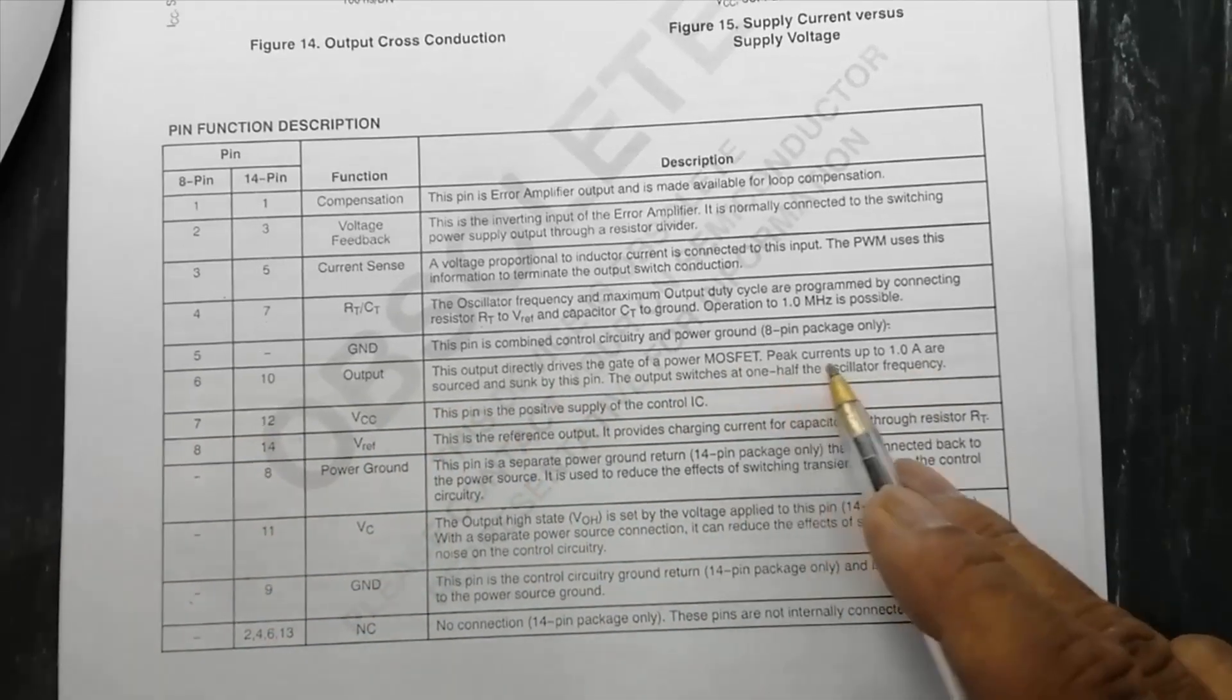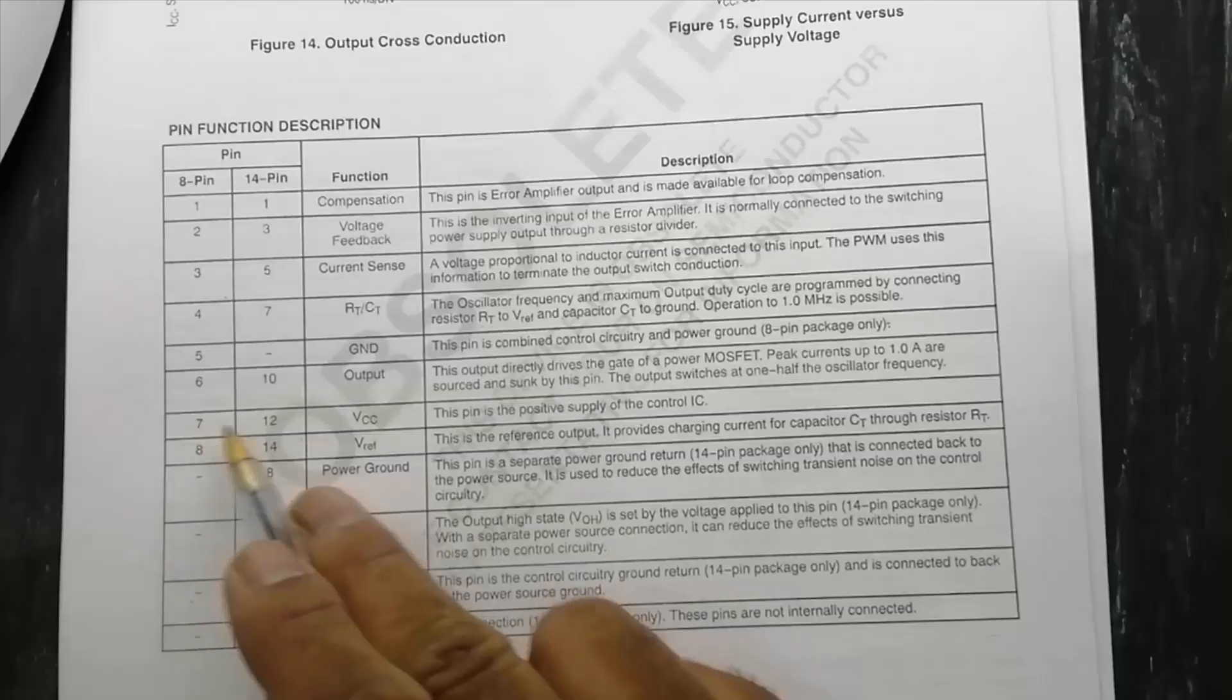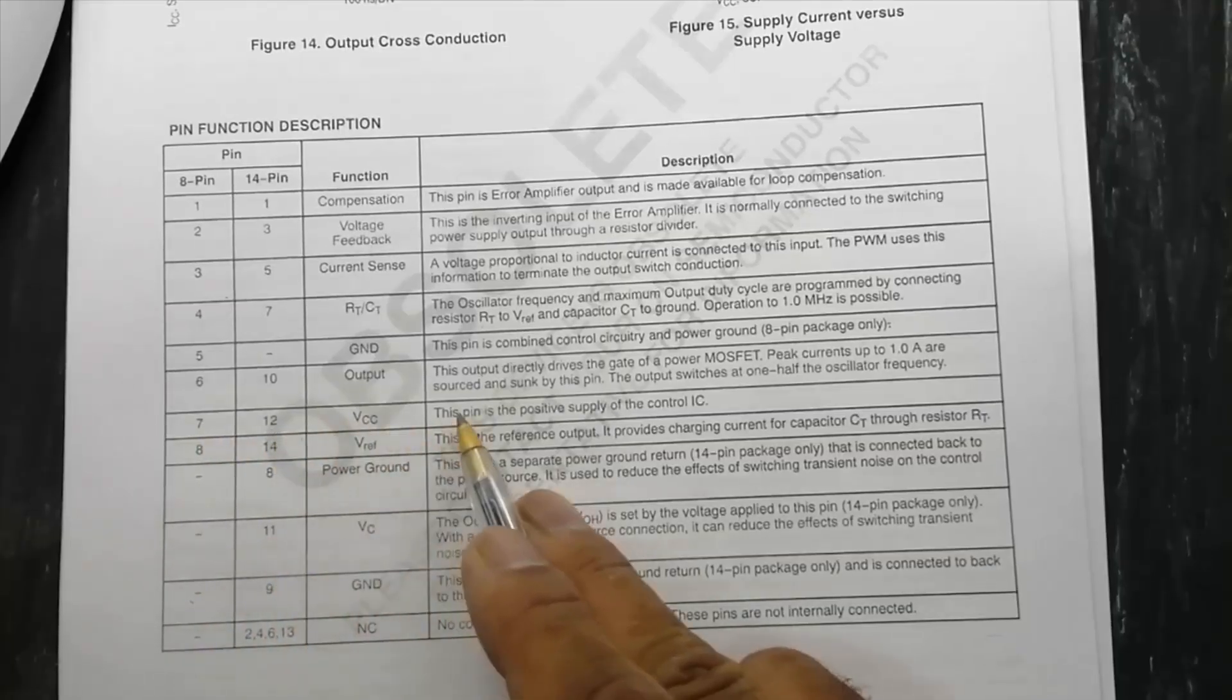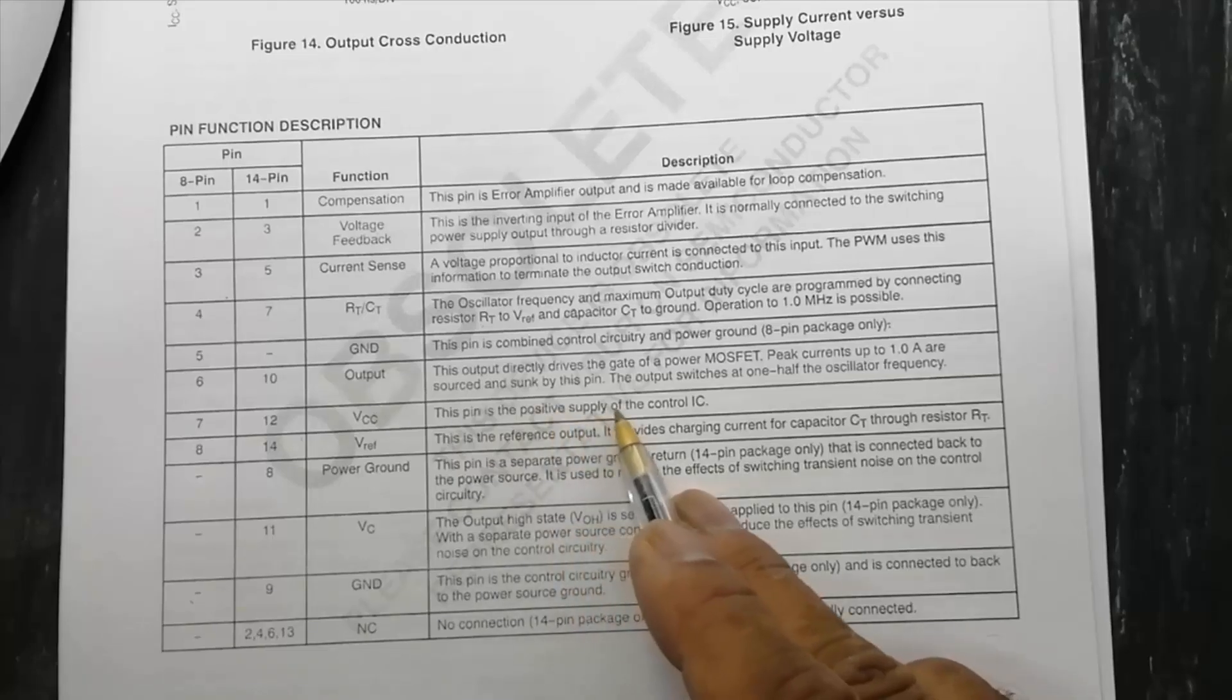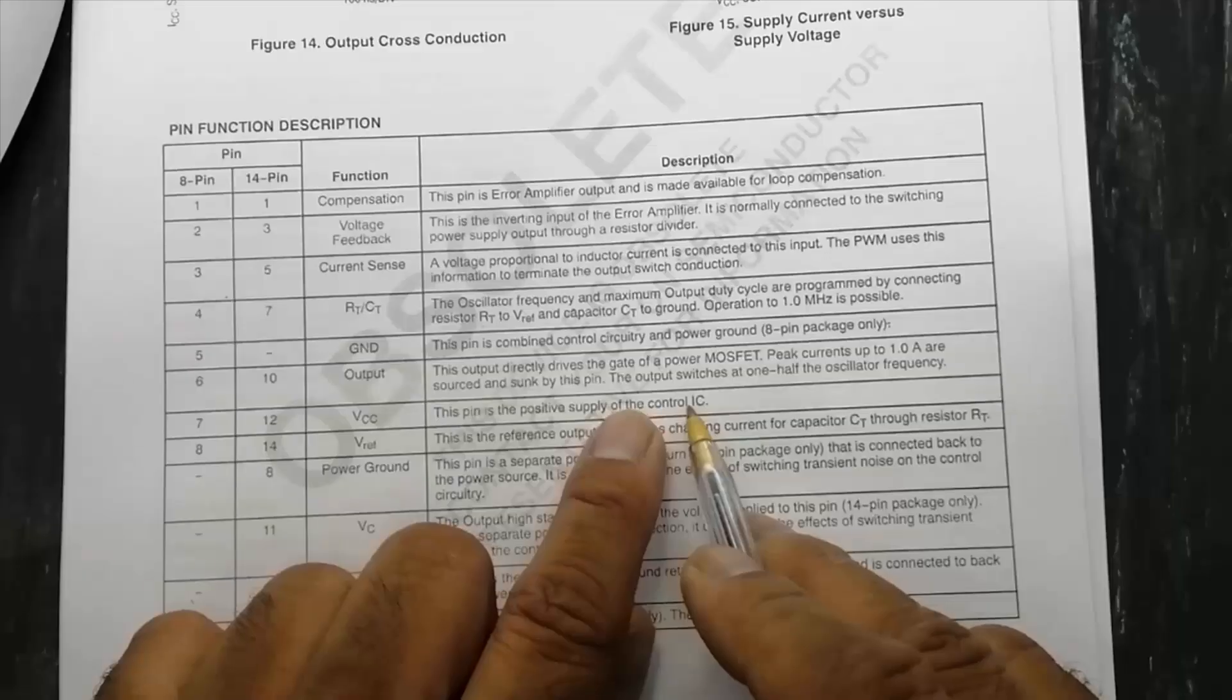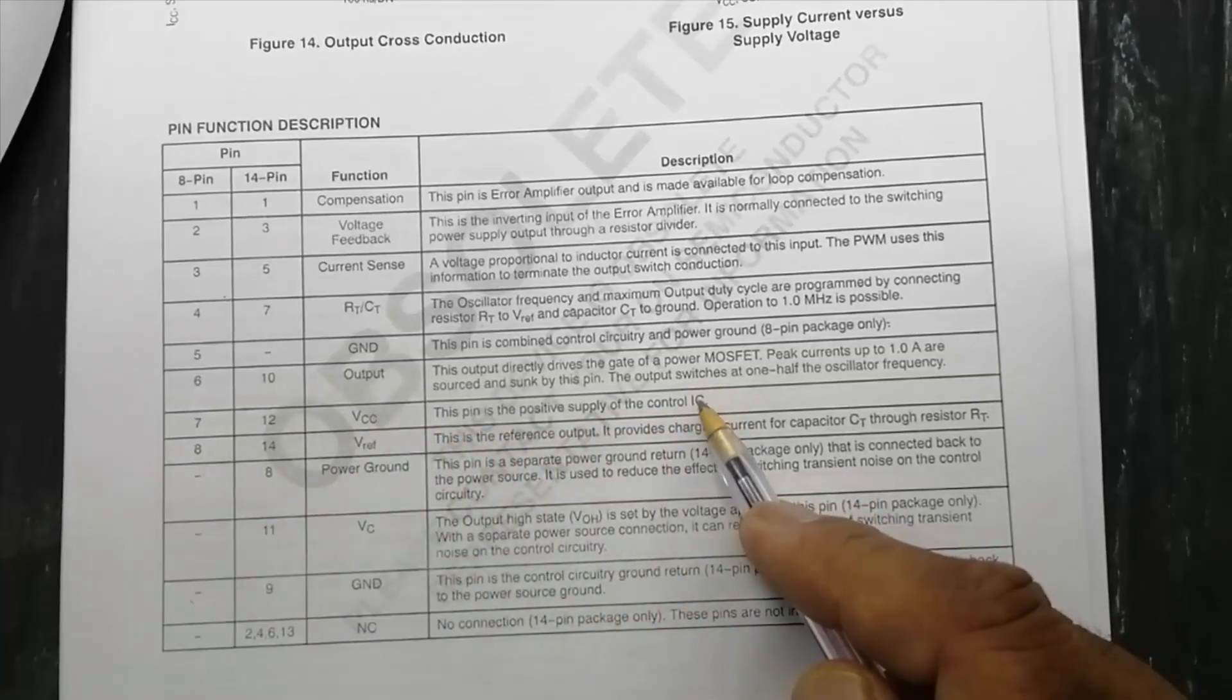Output of the MOSFET, peak current up to 1 ampere. Then pin number 7 and 12 is VCC. This pin is positive supply of the control IC. This is the chip voltage to power up the IC.